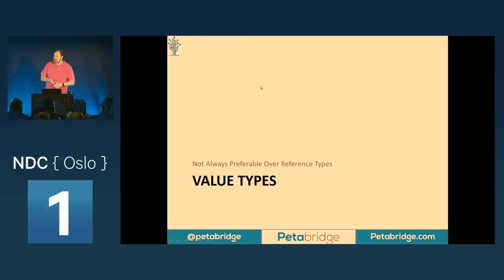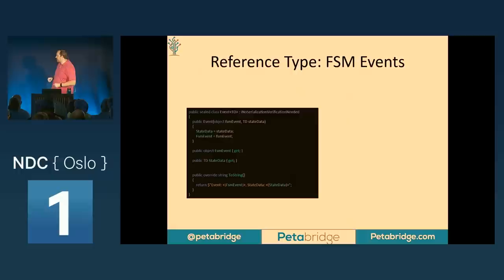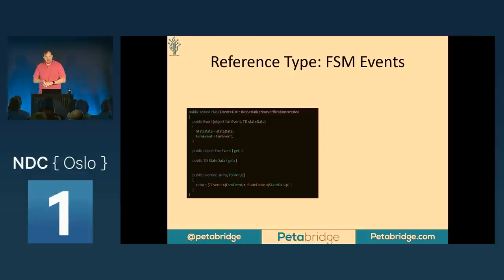Next, something a little counterintuitive: value types versus reference types. We've probably heard from people like David Fowler and others working on ASP.NET performance that value types are great — you should use them where you have copy-by-value semantics, resulting in fewer allocations, less GC pressure, and faster software. I'm generally also a proponent of that, but it can get nuanced.